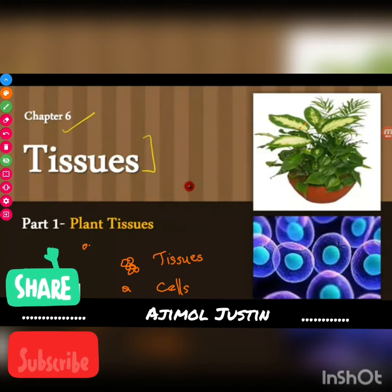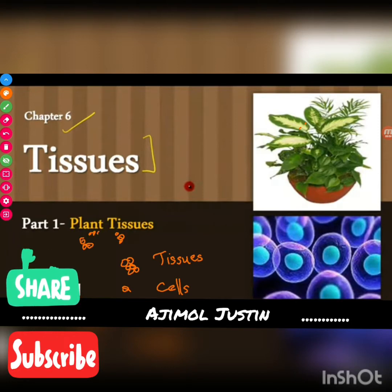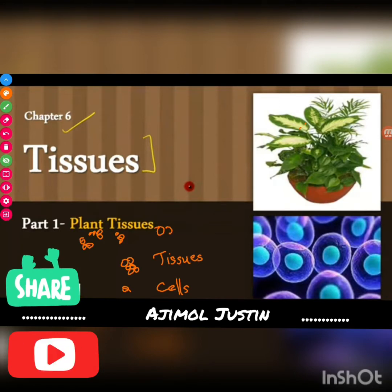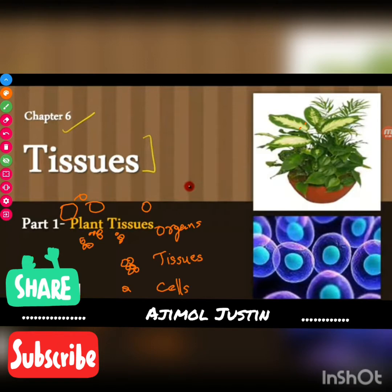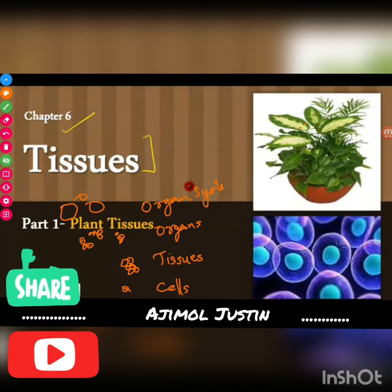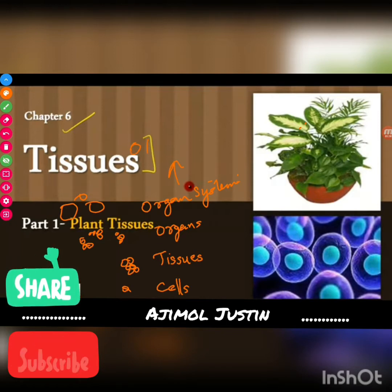Now, if there are a lot of tissues, different types of tissues together form organs. Many such organs together form an organ system, and many organ systems together form an organism.